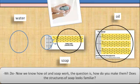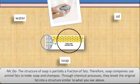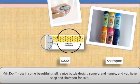Now that we know how oil and soap work, how do we make soap? The structure of soap is partially a fraction of fats. Therefore, soap companies use animal fats to make soap and shampoo. Through chemical processes, they break the original fat into structures similar to what we've seen. Then they add a nice fragrance, an attractive bottle design, some brand names — and voilà, you have soap and shampoo.